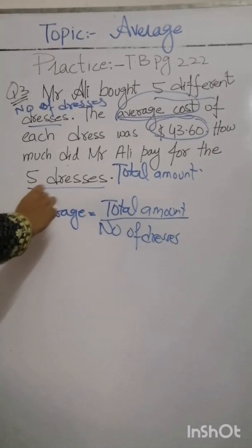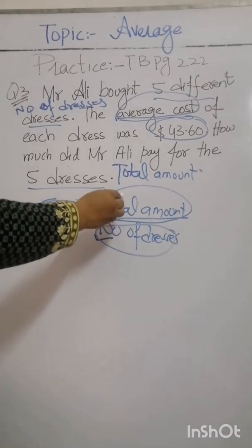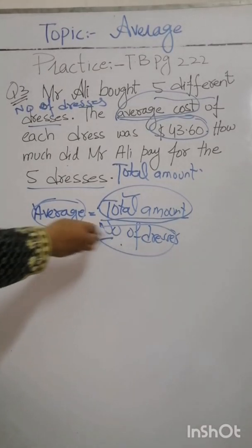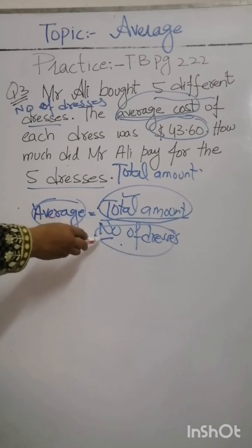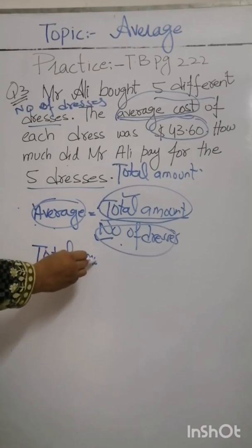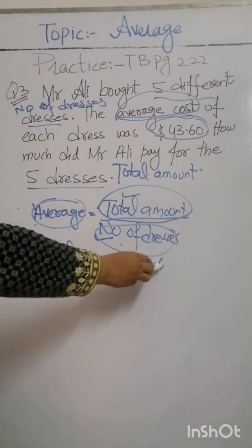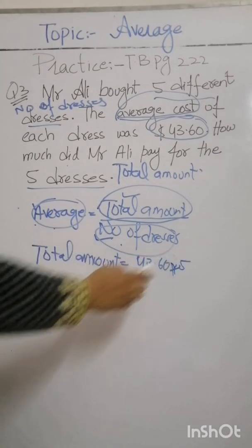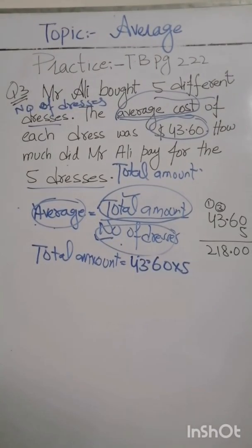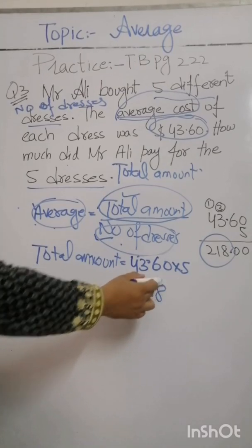We have the average and the number of dresses, and we have to find the total amount. We multiply these two values to get the answer. When this value comes to the left side, it is multiplied by the average. So total amount is equal to 43.60 multiplied by 5. When we multiply 43.60 by 5, we get 218. So the total amount is $218.